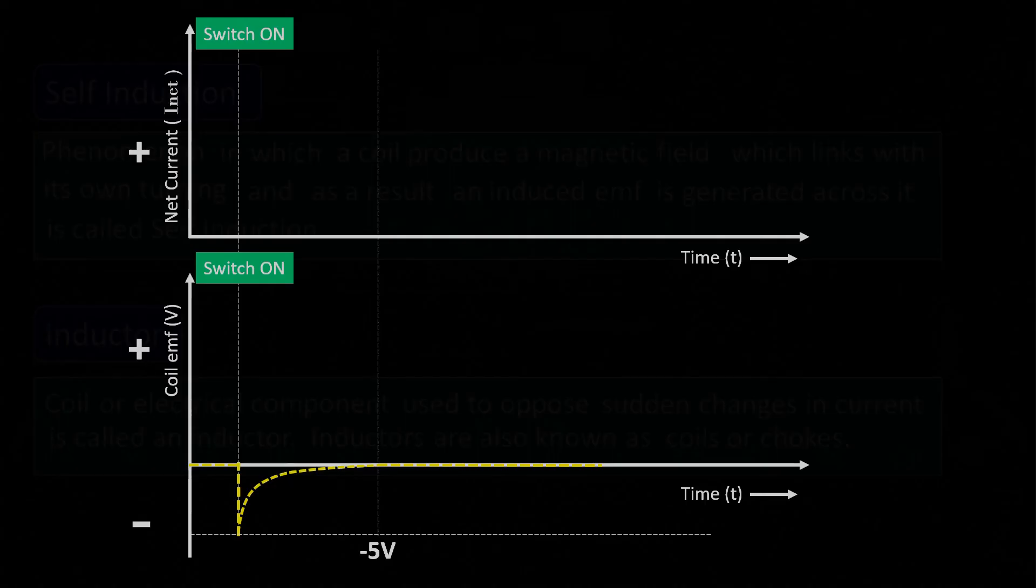Now let us plot the graph for net current flow in a circuit with time t when we switched on. As we had seen, when we switched on, the coil generated the maximum opposite EMF and made the initial net current flow equal to 0. Therefore, net current flow starting from 0 increases quickly when just switched on and finally increased slowly to reach maximum and constant value.